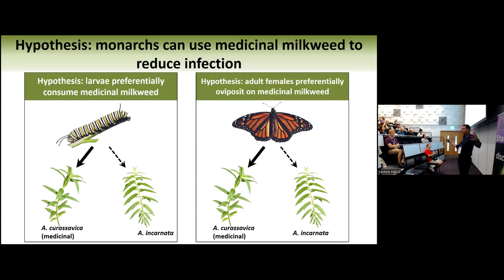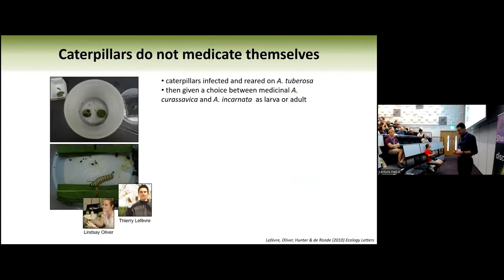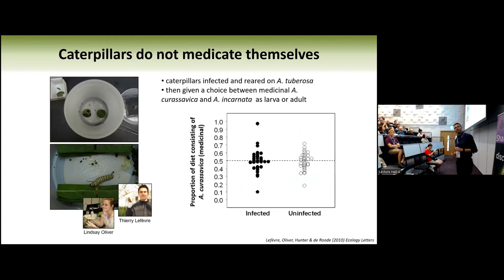The adult butterflies traverse much greater distances and have more choices. So the question was: if a monarch is infected and lays eggs, does she prefer to lay eggs on medicinal plants? For the caterpillar experiment, we gave infected and uninfected caterpillars stacks of milkweed leaf disks and simply measured how much of the different species they ate throughout their life. This was an utterly boring result — perfectly 50-50. Caterpillars had absolutely no preference whether infected or uninfected with the parasite.